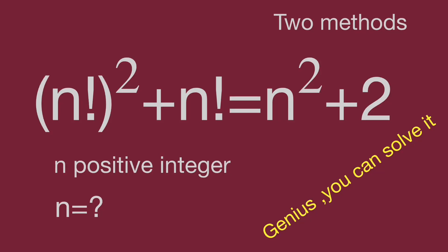Hello, you are watching Bala Hippo math genius readers. We have an interesting factorial question. In this video, we share two methods to solve the problem: one by math operations and the other by logical thinking. The question is: n factorial squared plus n factorial equals n squared plus 2, where n is a positive integer.